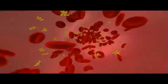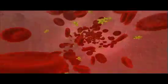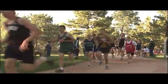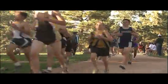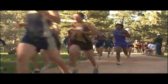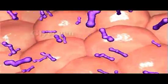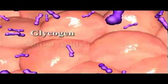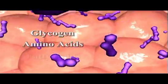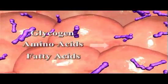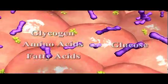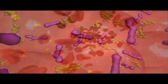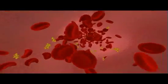When blood glucose levels drop — for example after skipping breakfast or a cross-country run — glucagon is released and signals liver cells to break glycogen, amino acids, and fatty acids down into glucose and to start slowly releasing the glucose into the bloodstream.